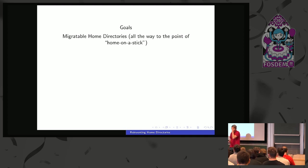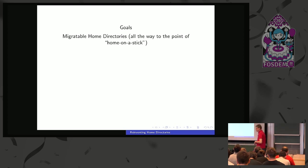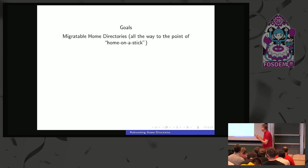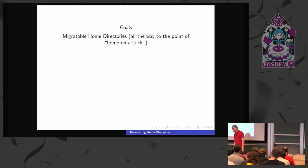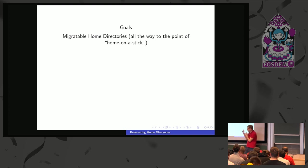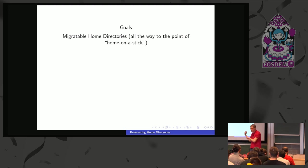Audience question: 80% of your problems are solved with ZFS already — snapshots, migration to other architectures — why not use it? I don't think ZFS solves any of these problems. Home directories for me are something self-describing: you have the data store and the user record metadata. ZFS doesn't do that. ZFS is not a user management system — it's a file system. This is about user management. I don't think I have to have the discussion here about what the difference between a file system and a user manager is. Let's discuss it afterwards.